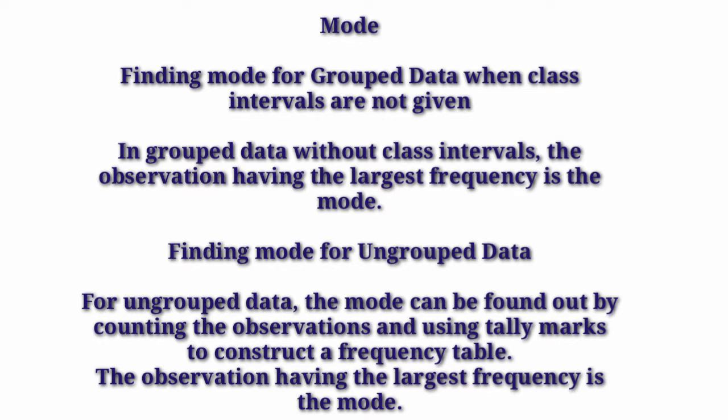For ungrouped data, the mode can be found out by counting the observations — checking which observation repeats the most. The observation having the largest frequency is the mode. For example, suppose 10 is a number that repeats 50 times, and 11 repeats 49 times. Then 10 has a higher frequency. So the mode of the data will be 10, because 10 repeats the maximum number of times. The observation with the largest frequency is the mode.